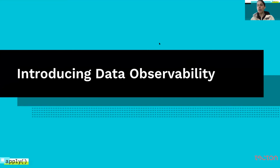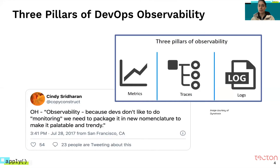The solution to this problem starts with looking at our counterparts in software engineering. Software engineering has actually solved similar problems, and we can use corollaries and lessons learned from software engineering to apply to data. If you're familiar with the concept of observability more broadly, these are principles from DevOps developed over the last couple of decades that help make sure our favorite things don't break — like Netflix or Slack — and if they do, they're fixed very quickly. A couple of decades ago, if your e-commerce website was down, no one noticed. In today's world, that's totally unacceptable, and we have best practices to prevent it. How do we create the same thing for data?